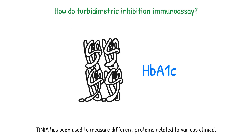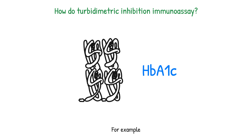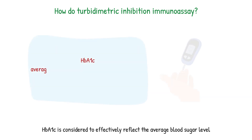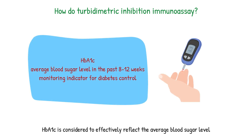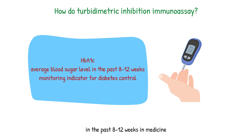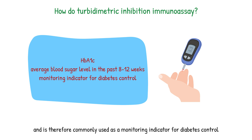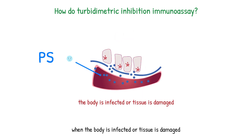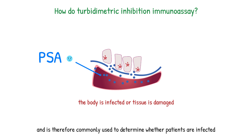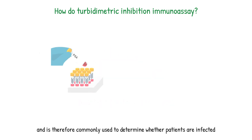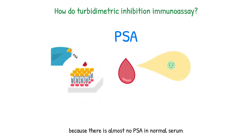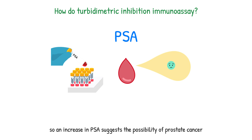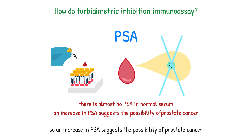TINIA has been used to measure different proteins related to various clinical or disease conditions. For example, HbA1c is considered to effectively reflect the average blood sugar level over the past 8 to 12 weeks and is therefore commonly used as a monitoring indicator for diabetes control. CRP is a protein that rises sharply in plasma when the body is infected or tissue is damaged, and is therefore commonly used to determine whether patients are infected. Additionally, there is almost no PSA in normal serum, so an increase in PSA suggests the possibility of prostate cancer.